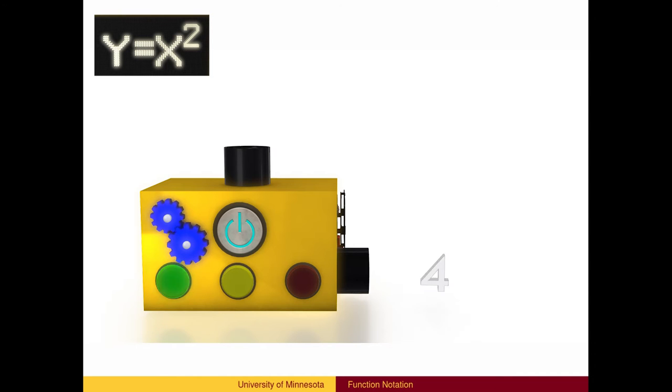Different inputs, such as 5, will produce different outputs. In this case, 5 squared is 25. The input negative 5 also produces the output 25.